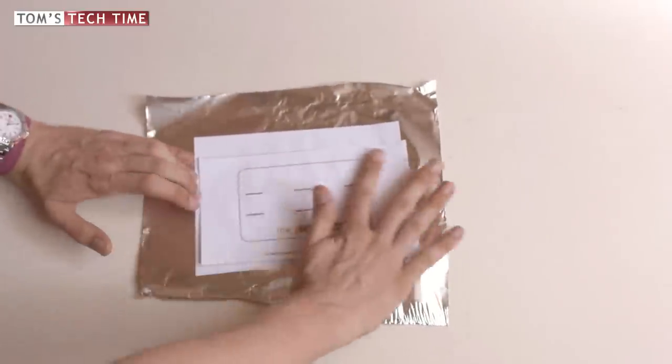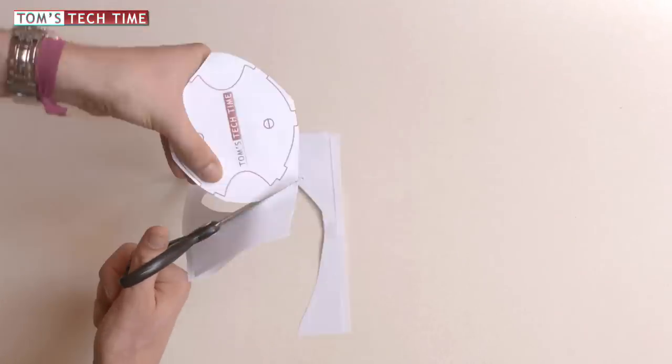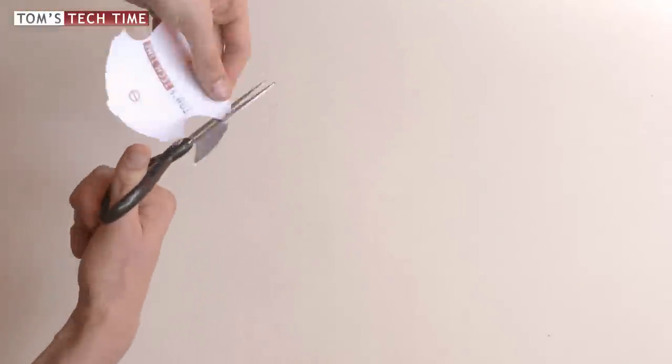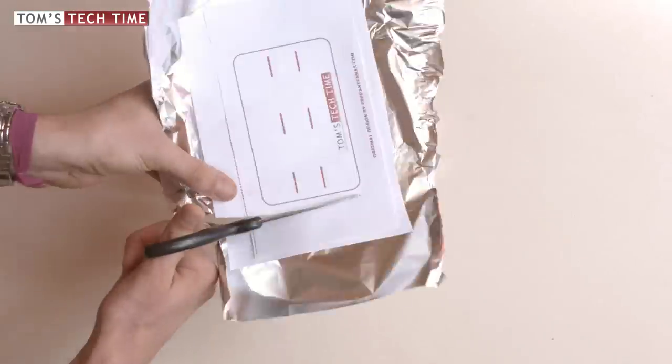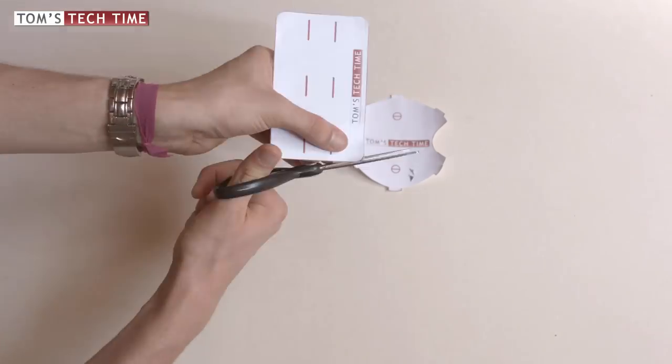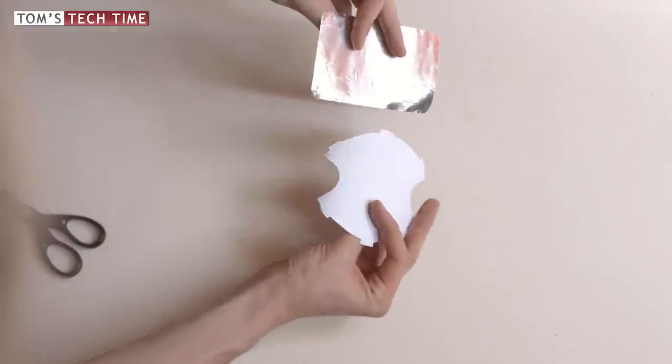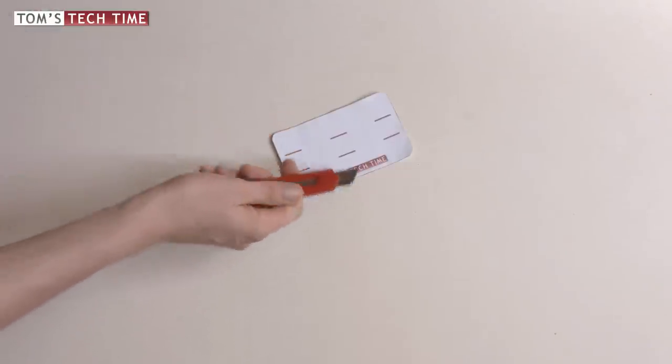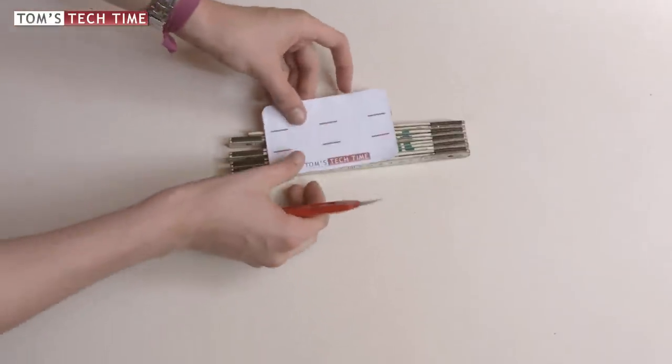And after letting the glue dry for a few minutes, take a scissor and cut out both structures carefully. Now take the cutter knife and the squared paper and cut through the red lines carefully. And you will end up with six incisions.